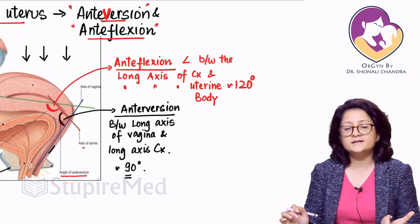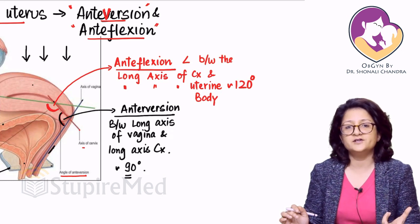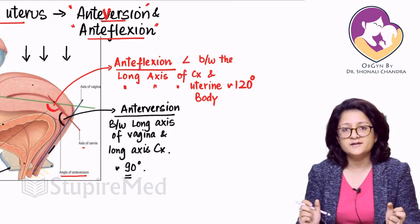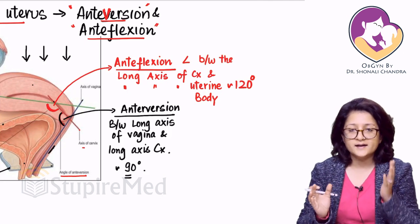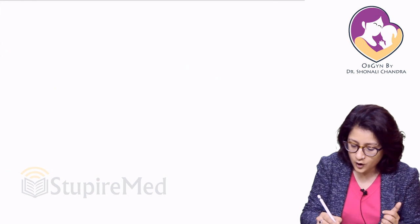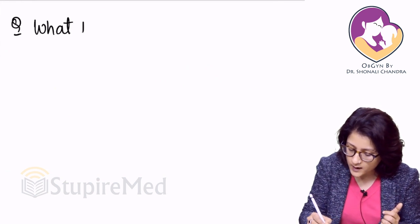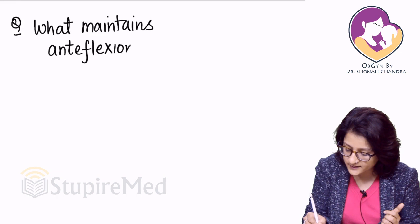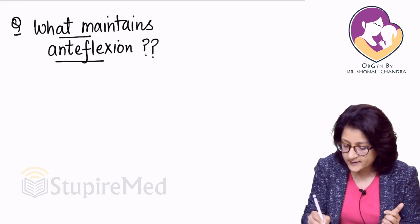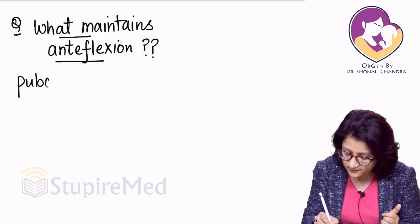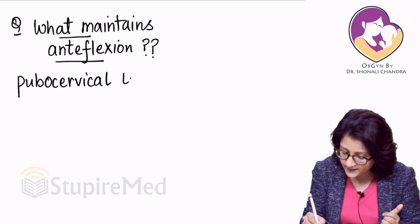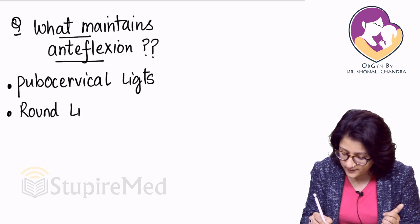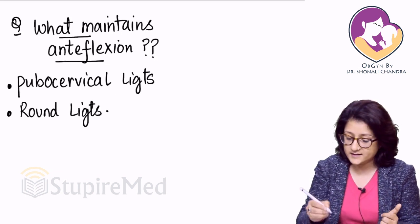These are the two important angles: anteversion and anteflexion. What maintains these angles — the normal position of the vagina and cervix in the pelvis — is the ligaments. They have specifically asked in exams: what maintains anteflexion? Anteflexion means the uterus is pulled anteriorly. The ligaments that maintain it are the pubocervical ligaments and the round ligaments.